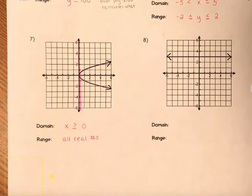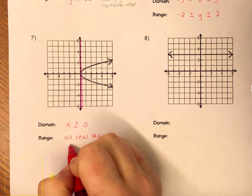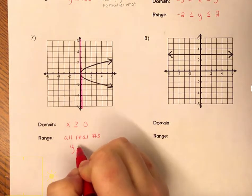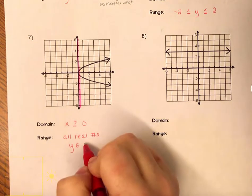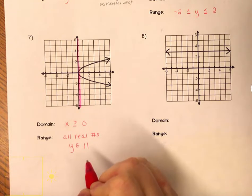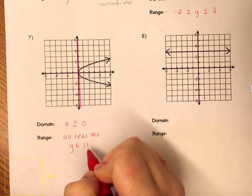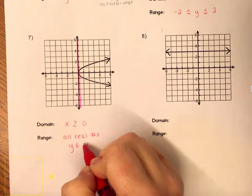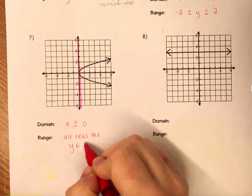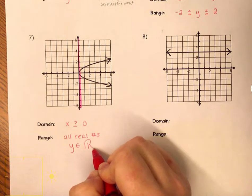Another way of writing this in correct notation: y is an element of all real numbers. That 'element of' symbol is like a fancy e, and 'all real numbers' is the fancy R — you draw two vertical lines and start in the back, making your R go to the front.